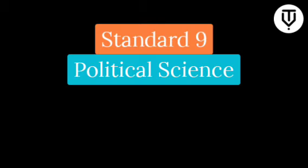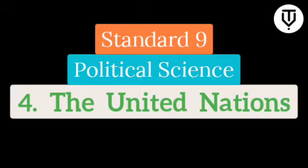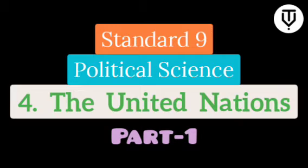Standard 9th, Political Science, Chapter 4: The United Nations, short form UN. What we are going to learn in this chapter is that the United Nations is an international organization which was established to ensure peace and security at the international level. It works for maintaining peace between two countries and enhancing security at the international level. We will be studying the objectives, its works, its principles, the structure, and the role of the United Nations in securing peace and achieving its goals.